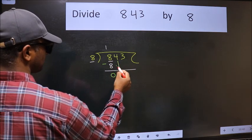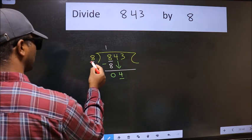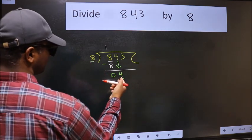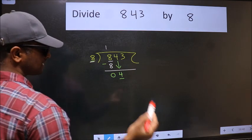After this, bring down the beside number: 4 down. Now here we have 4 and here 8. 4 is smaller than 8, so we should bring down the second number.